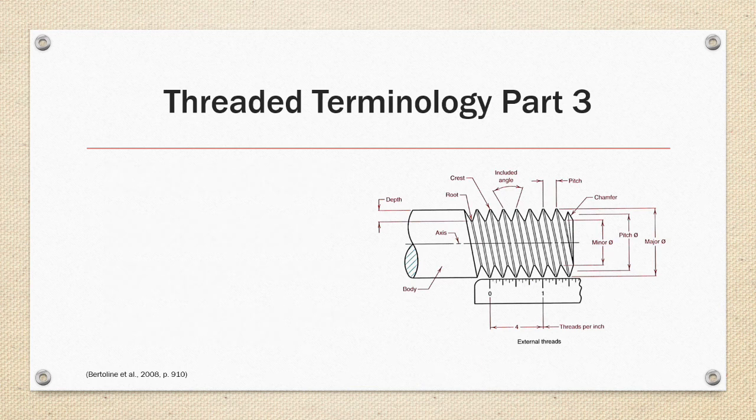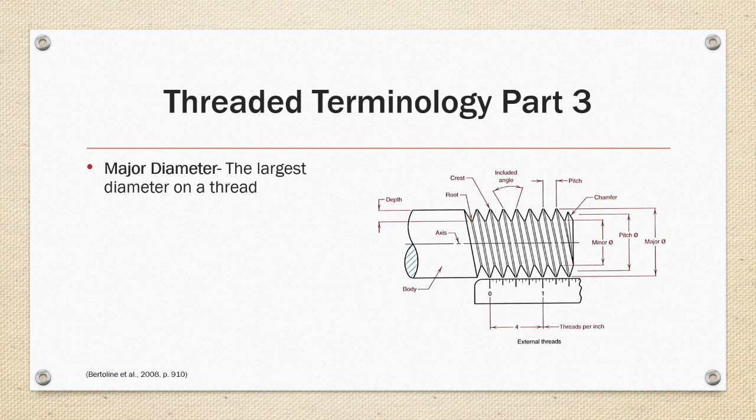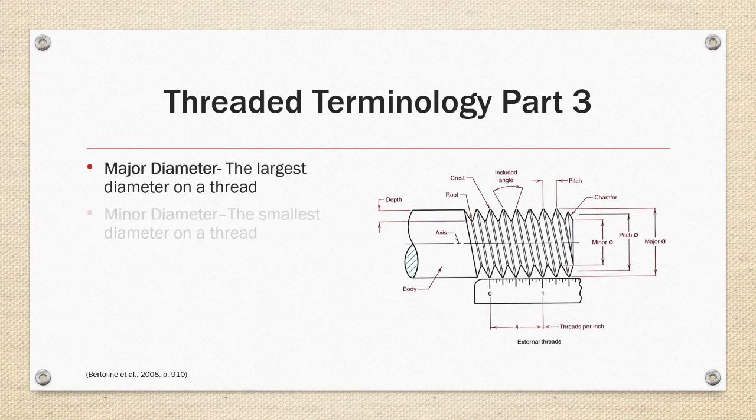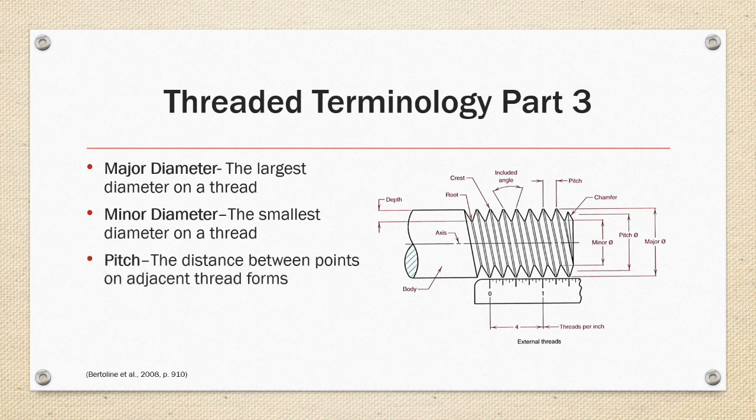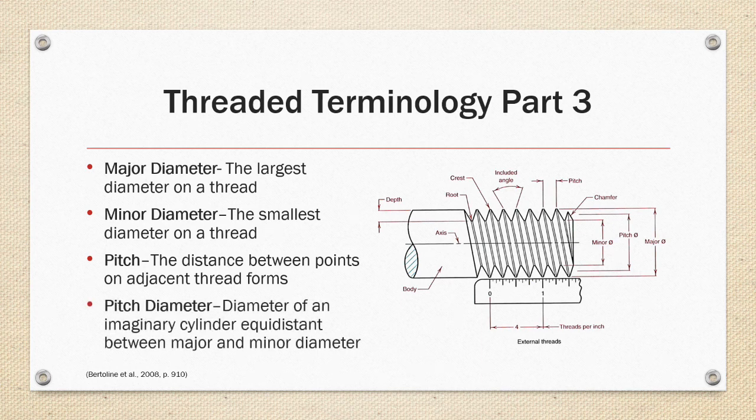Thread terminology part three. Major diameter is the largest diameter on a thread. Minor diameter is the smallest diameter on a thread. The pitch is the distance between points on adjacent thread forms. And the pitch diameter is an imaginary cylinder equidistant between the major and minor diameter.